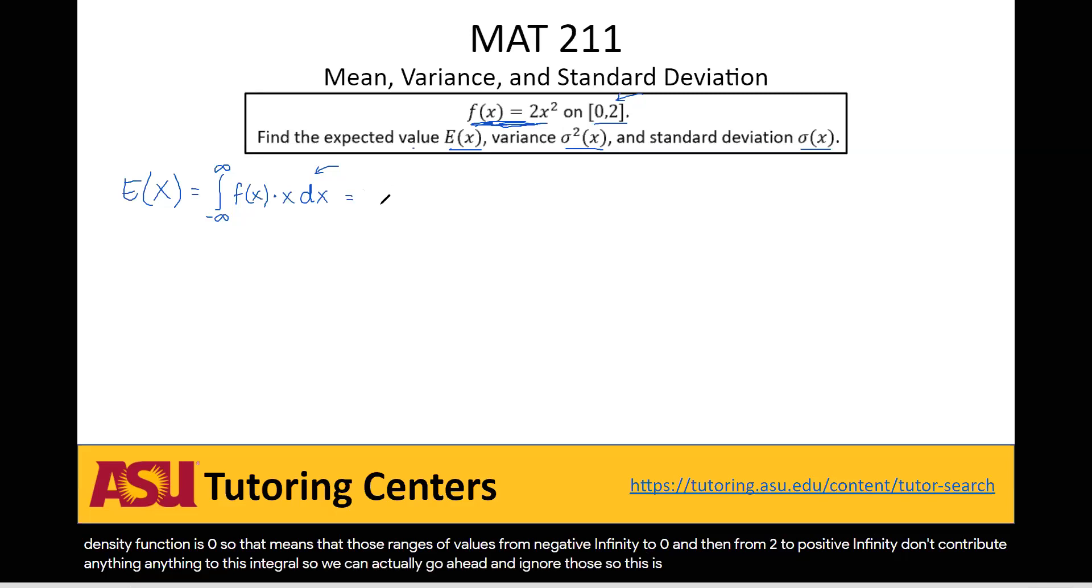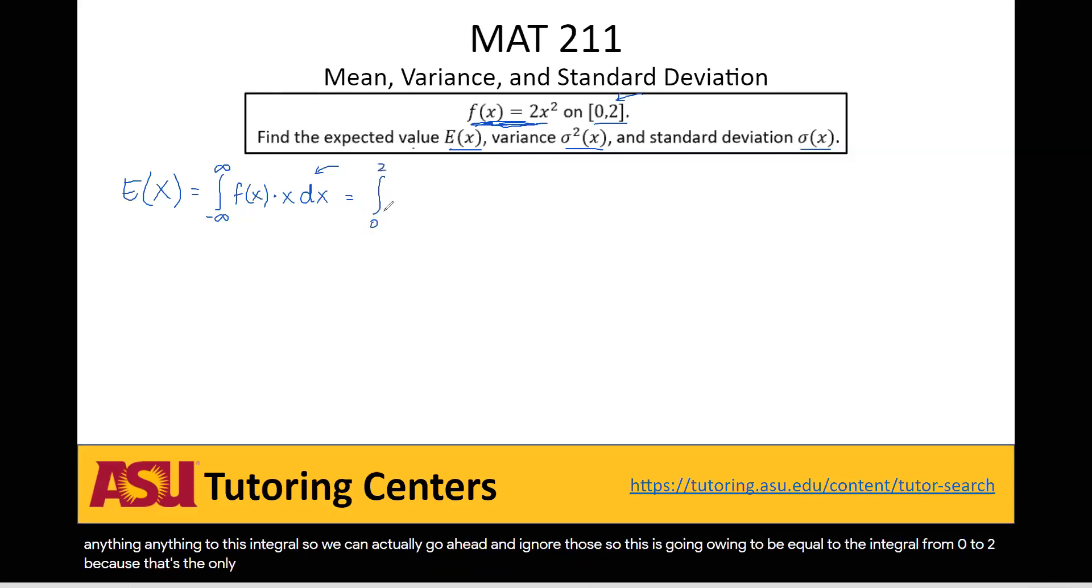So this is going to be equal to the integral from 0 to 2 because that's the only range in which this probability density function is anything other than 0. So now we have f(x) here, which is our function here, 2x squared times our x, times x from here, and then dx.